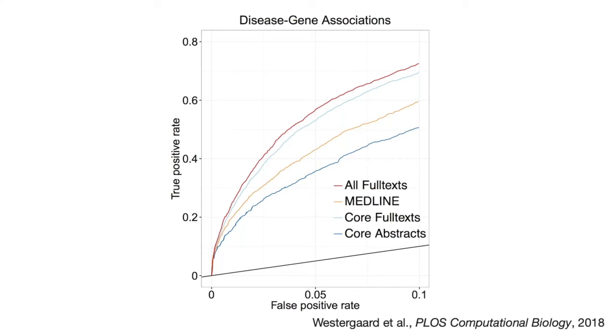Of course, the reality is that when we want to build databases that we are free to distribute without being tied down by publisher licenses, we're limited to working with abstracts plus the open access literature from PubMed Central. So that's what we process on a regular basis — and by regular basis I mean we update the text mining results every weekend. That's only possible because the software is so fast.